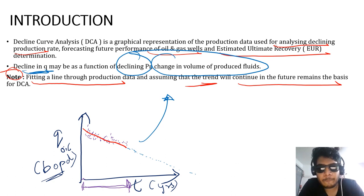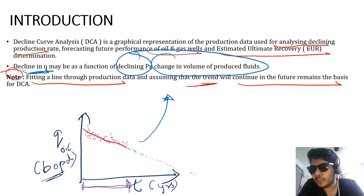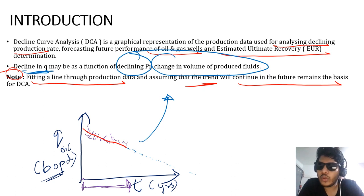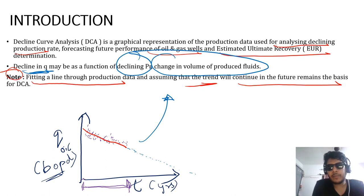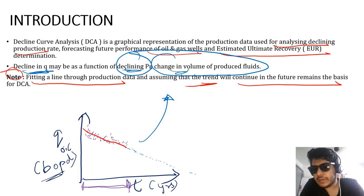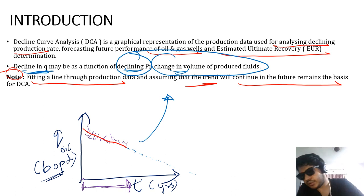Plus, the volume of produced fluids we are getting at the surface is also going to change. As we know, oil, water, and gas are not going to be obtained at the same rate at which they were producing initially — it's going to change definitely because it's a reservoir. So these two parameters are primarily responsible for the declining production rate.